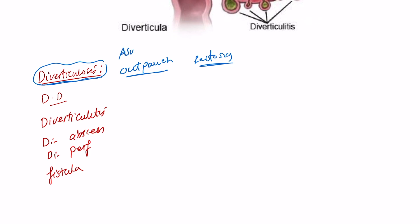So it's asymptomatic, that's the key word. Outpouching of the mucosa, musculosa of the wall of the bowel, specifically in the rectosigmoid region.